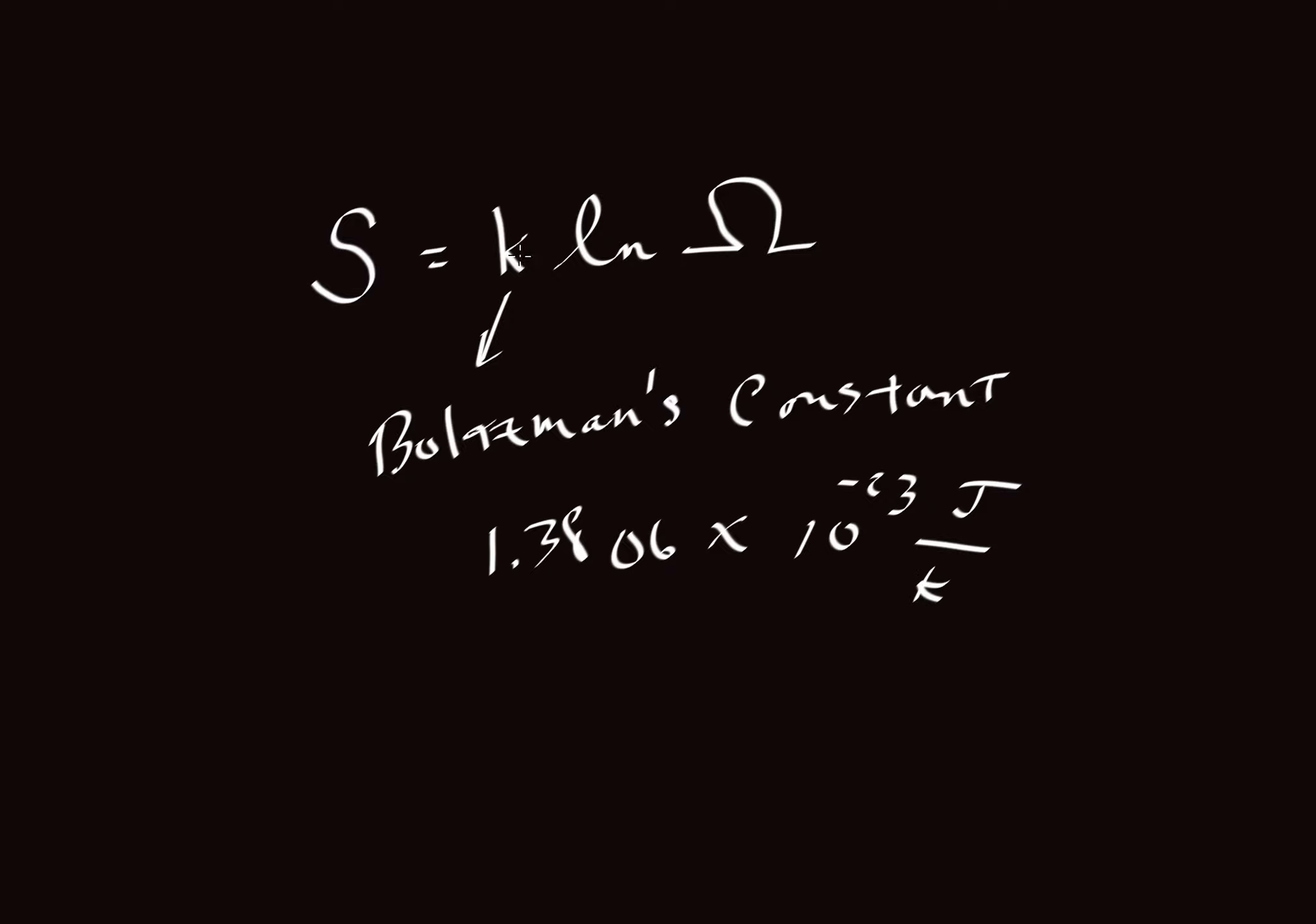So that is the proportionality constant that equates entropy with this fellow here, omega. And so what is omega? Omega is the number of total possible states of the system. How many ways can we configure a system? And when we think about how many atoms are even in a very small amount of material, this number begins to become very large.